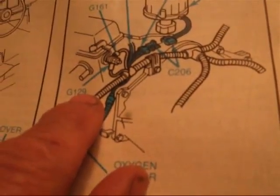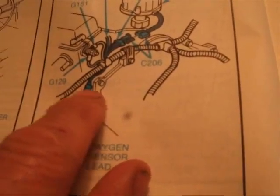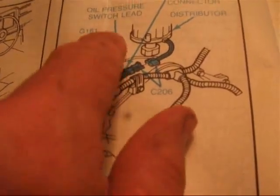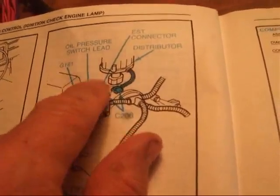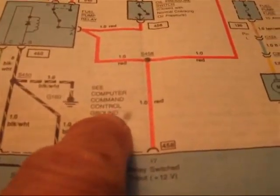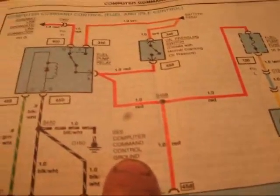This video is just about cleaning this particular ground location, ground 129 and ground 161. Ground 161 is a computer command control ground for the ECM.